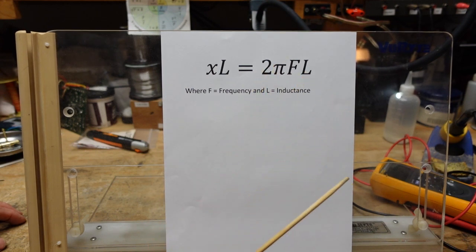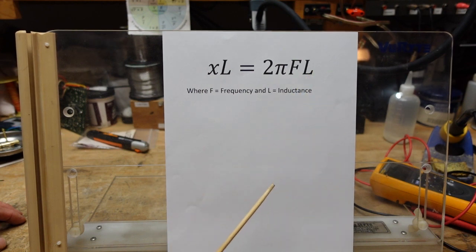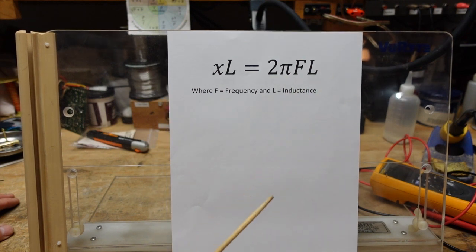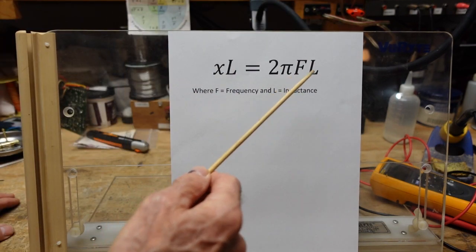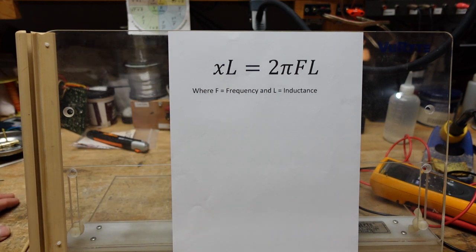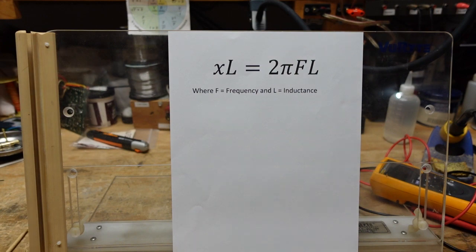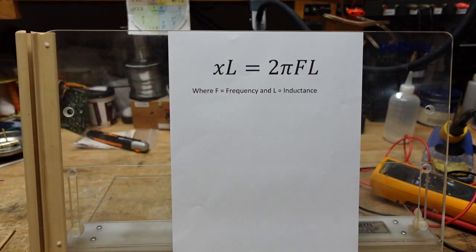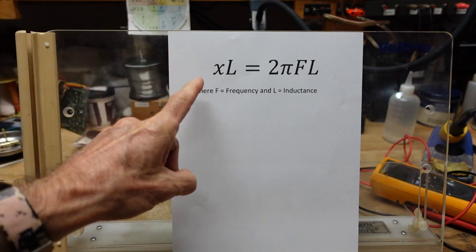Very often, the vast majority of the time, your inductor is fixed. There are variable inductors found in tuner circuits, but for the most part inductors we deal with are fixed. So the only changing parameter would be frequency: as frequency goes up, inductive reactance goes up; frequency goes down, inductive reactance goes down. Reactance affects both inductors and capacitors, however capacitive reactance is the opposite or inverse — we'll talk about that when we discuss capacitors.